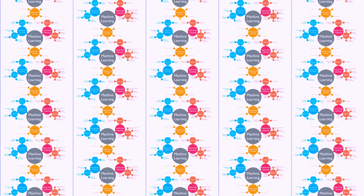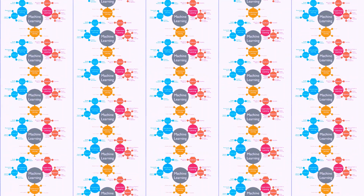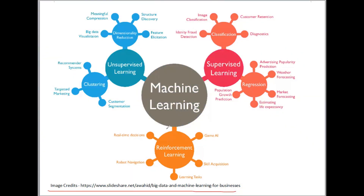Machine learning is a very big umbrella under which a lot of subfields come in. Machine learning is primarily divided into certain subcategories: the first one is supervised machine learning, second is unsupervised, there is also something known as semi-supervised — we will talk about that later — and then there is reinforcement learning. First of all, we need to understand these three categories.